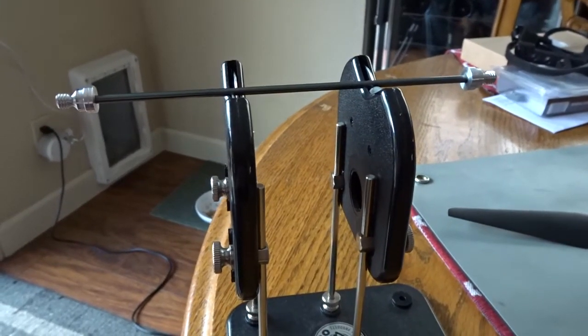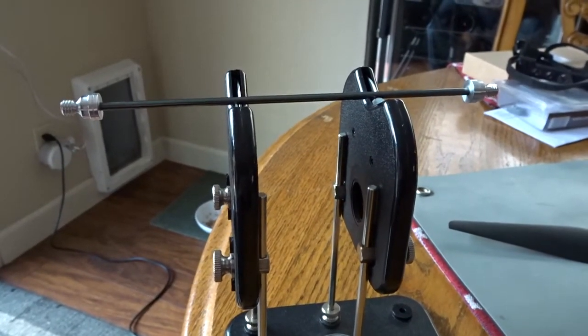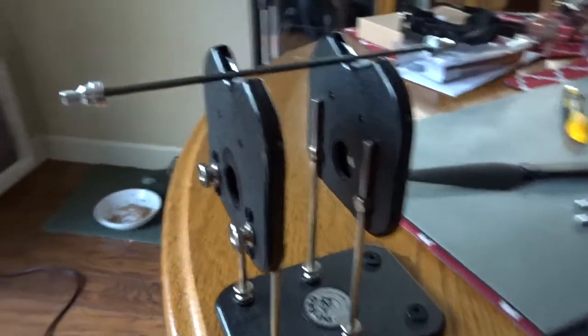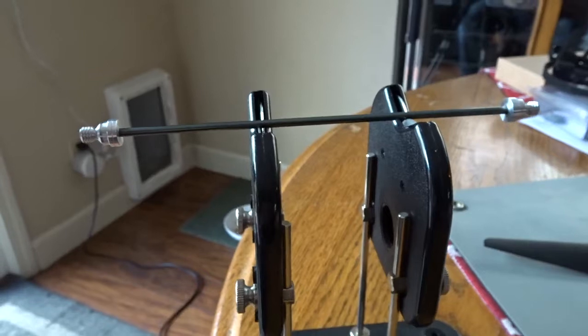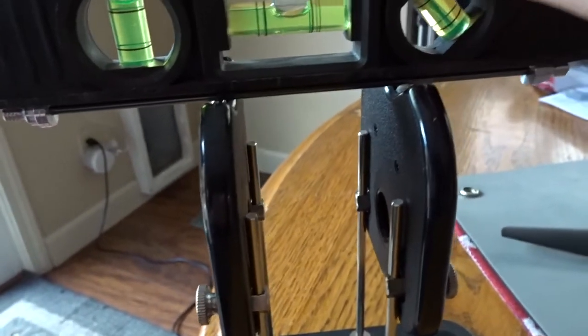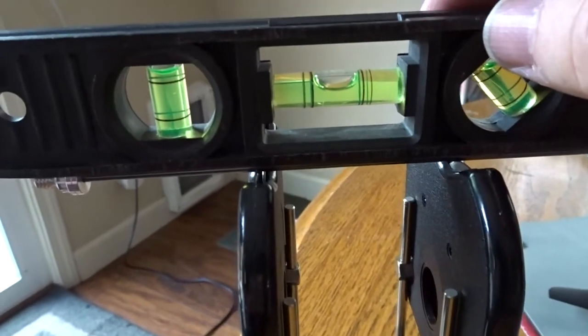Okay, this video is going to show the results of balancing with three different prop balancing shafts on the Dubrow prop balancer. First, we're going to show that the front-to-back alignment is level. Put the bubble level on.